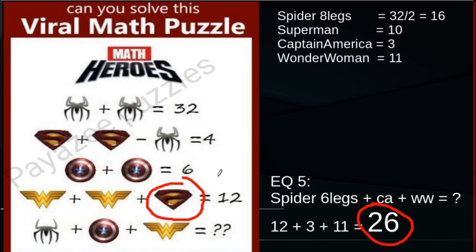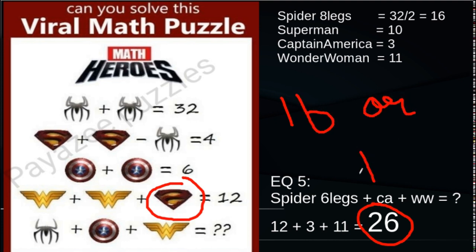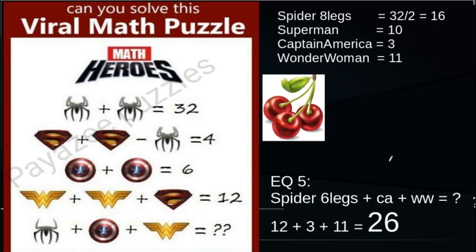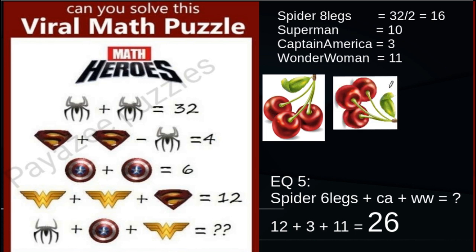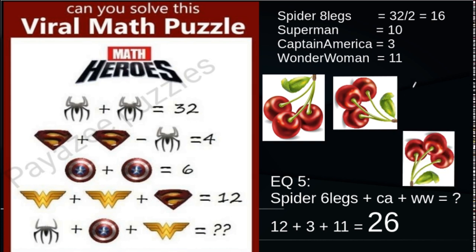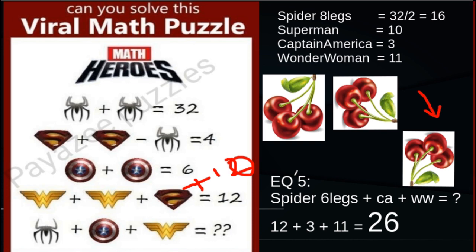So there can be two answers: 16 or 26, and both solutions are correct depending on your interpretation. According to me, if you rotate a symbol like a cherry, it still holds the same value — so I consider Superman as positive 10, making the answer 16. Like and comment what you think the answer should be, and subscribe to the channel. Thank you very much!